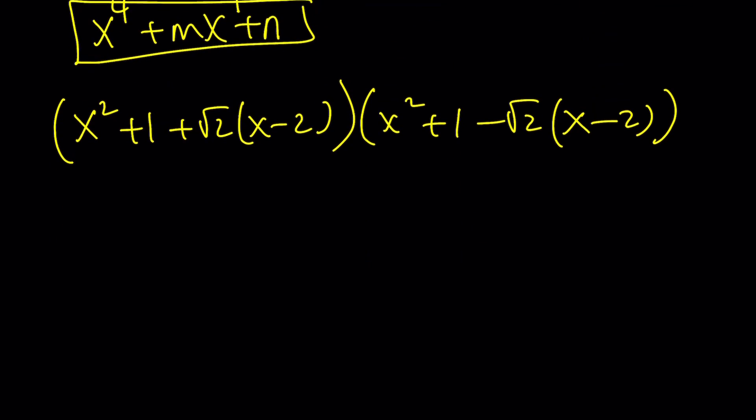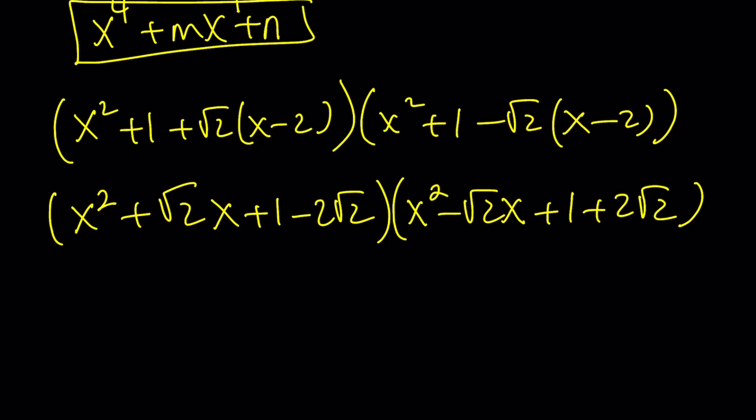And if you rearrange the terms a little bit, you're going to get the following: x squared plus root 2x plus 1 minus 2 root 2. You can write it as 1 minus 2 root 2. And then the other factor is going to be x squared minus root 2x plus 1 plus 2 root 2. Make sense? Who would guess that these would be the factors of this kind of expression?